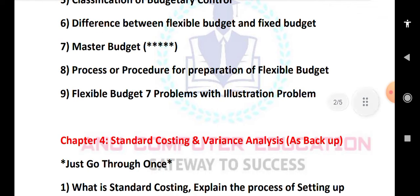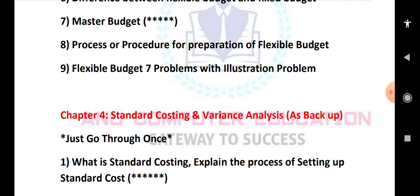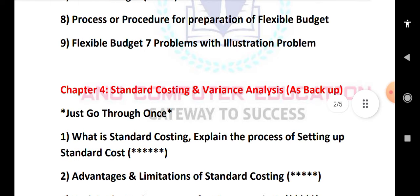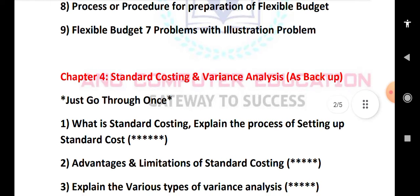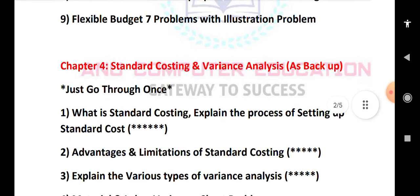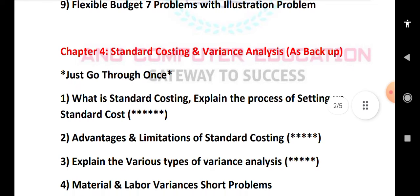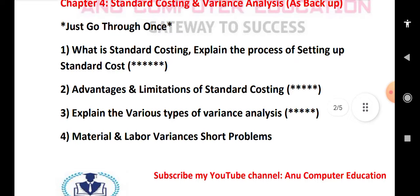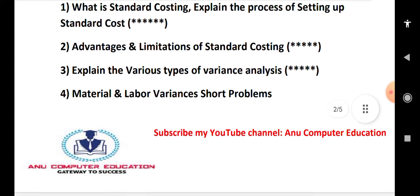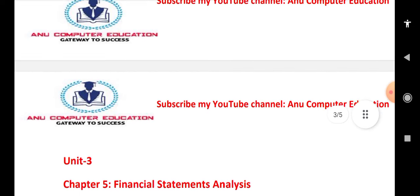There are seven budget problems with illustrations — practice those. Also from this unit: standard costing — explain the process of setting up standard costing, its advantages and limitations. Variance analysis is a very important question from this unit. Practice short problems on material variances and labor variances.